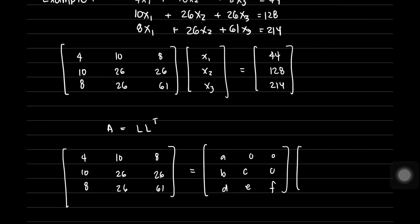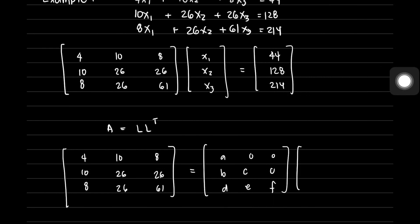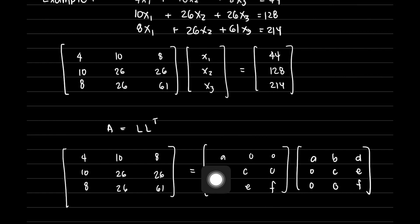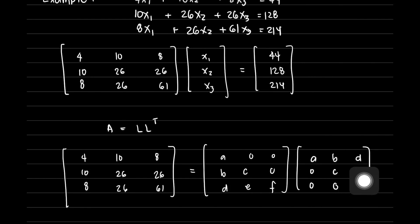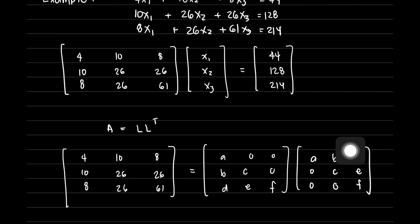When we say transpose, the rows become columns and the columns become rows. So the transpose of the lower triangular matrix would have entries: first row A, 0, 0; second row B, C, 0; third row D, E, F. This is the lower triangular matrix L, and this is its transpose L^T — you can see that each row becomes a column.